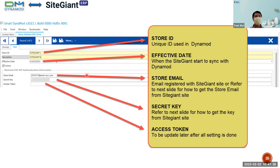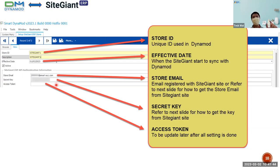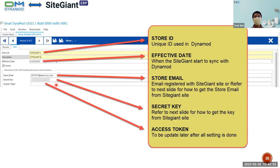Moving on to the SiteGiant ERP API. You can get the secret key from your SiteGiant API — I will show you where the secret key is located later. For the access token, at the end of this setup we get the access token, because it requires all the necessary information to be filled in first before we can communicate with the SiteGiant ERP. The access token is like the key to enter the ERP store.